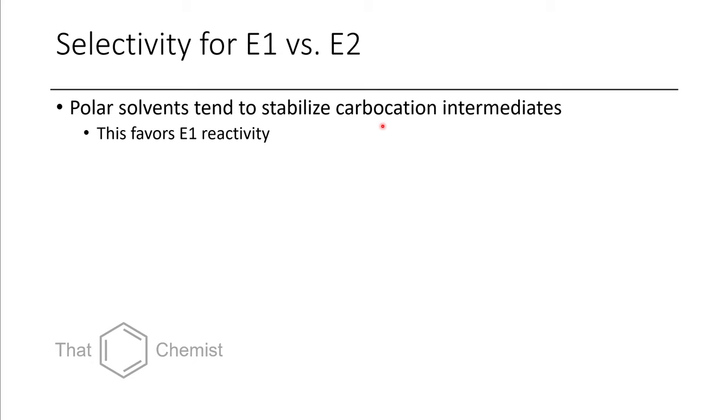Additionally, if you use a very strong base, something like LDA or potassium tert-butoxide, that's a very strong base and it's going to favor E2 elimination.